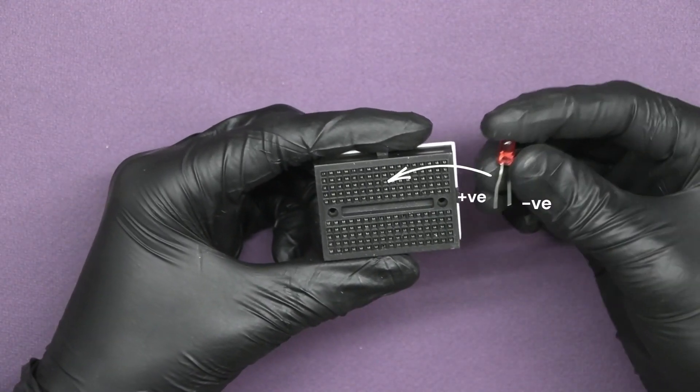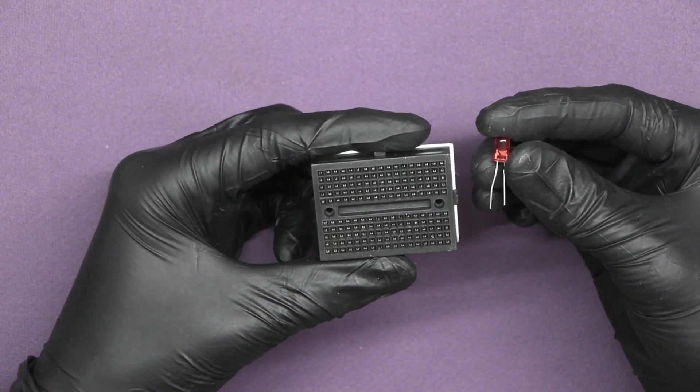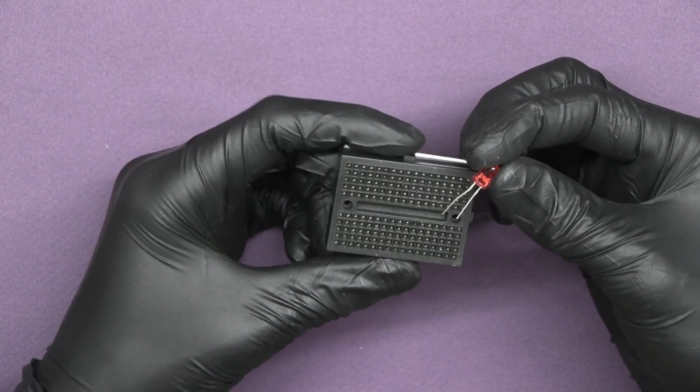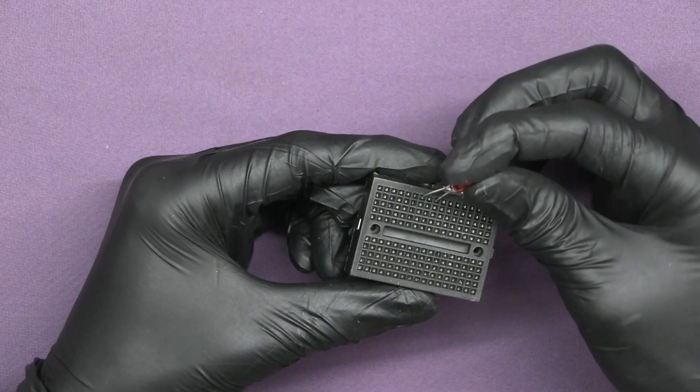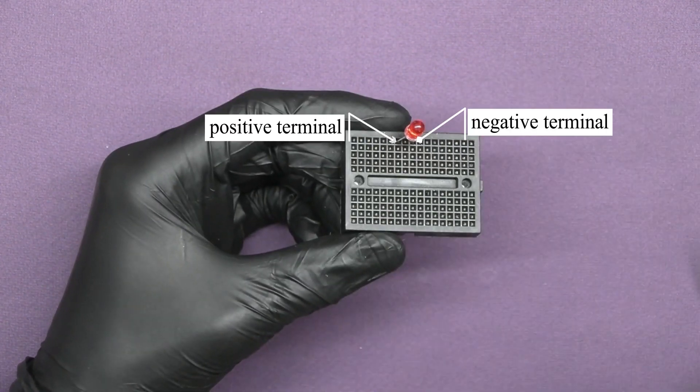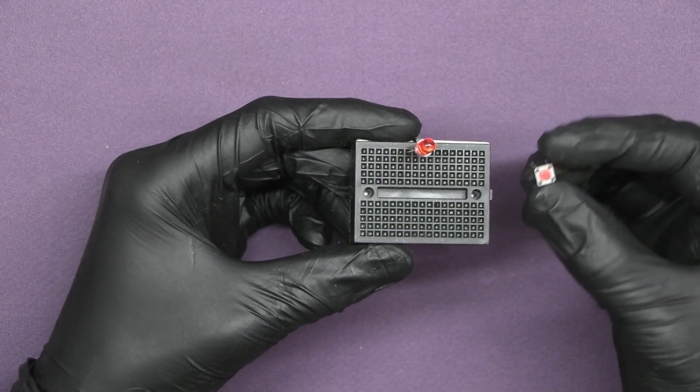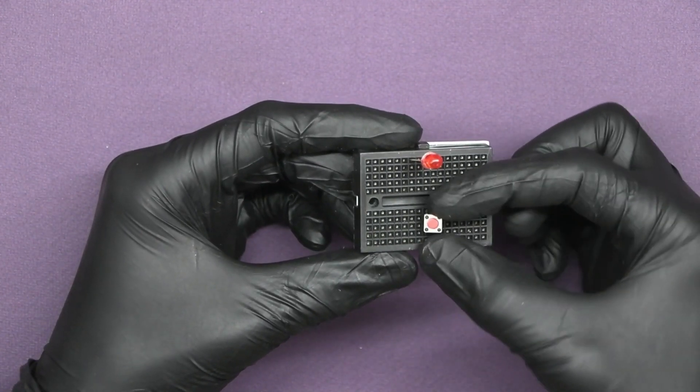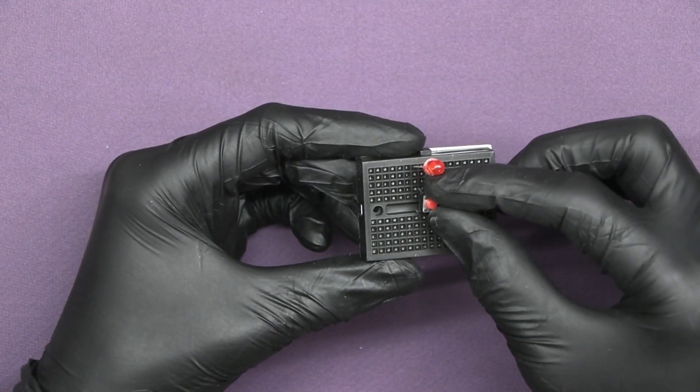In LED the longer leg is positive and shorter is negative. Keep in mind the negative and positive terminal for further connections. Insert the push button into the breadboard. If you want to know more about push button check the video on our channel.